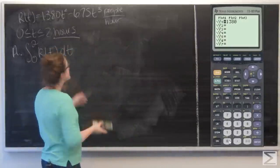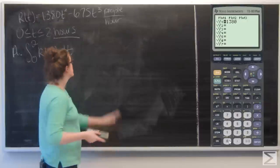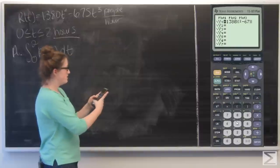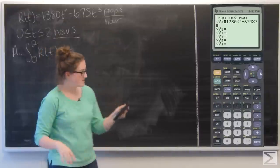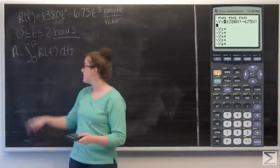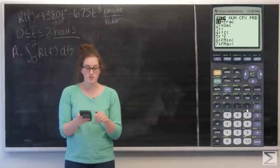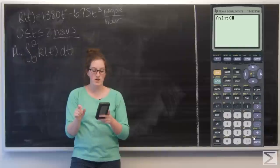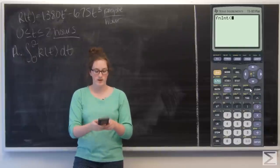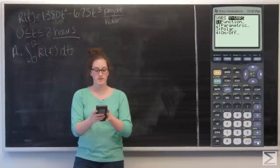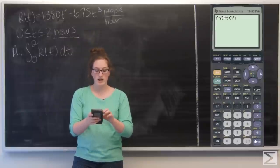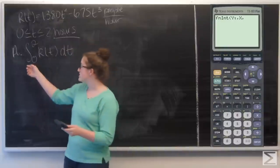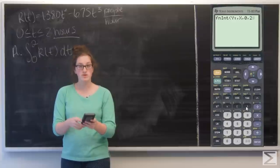Type 1380 — it's easiest to use x on the graphing calculator — x squared minus 675x cubed. Then use the fnInt command to evaluate the definite integral. Go to Math, scroll down to number nine. Call up the function using Vars, Y-Vars, Function, Y1. Then add a comma, the variable x, another comma, and the bounds 0 to 2. Close parentheses and hit Enter.